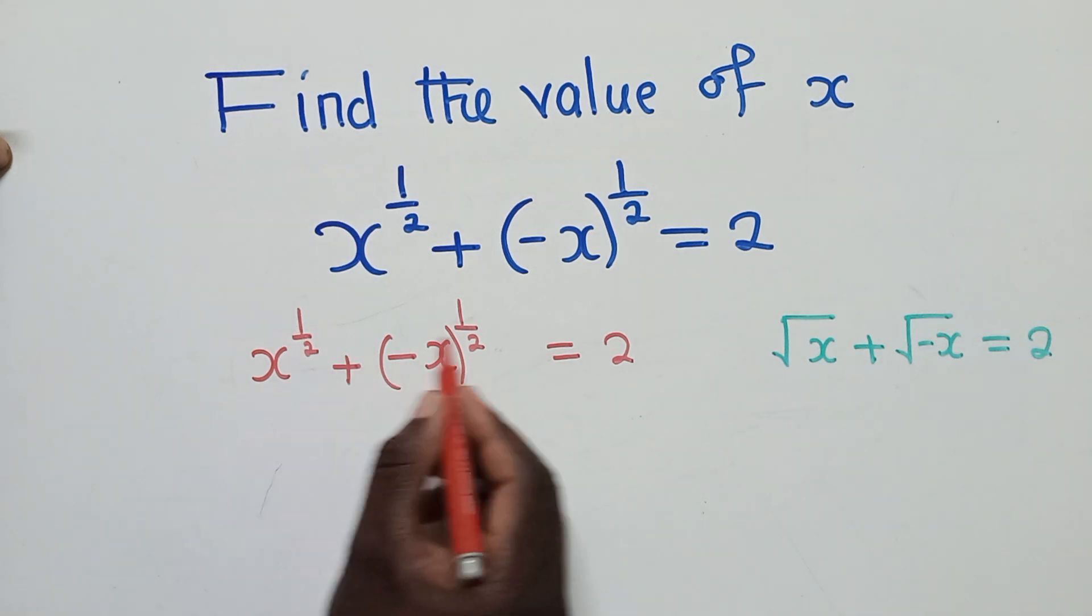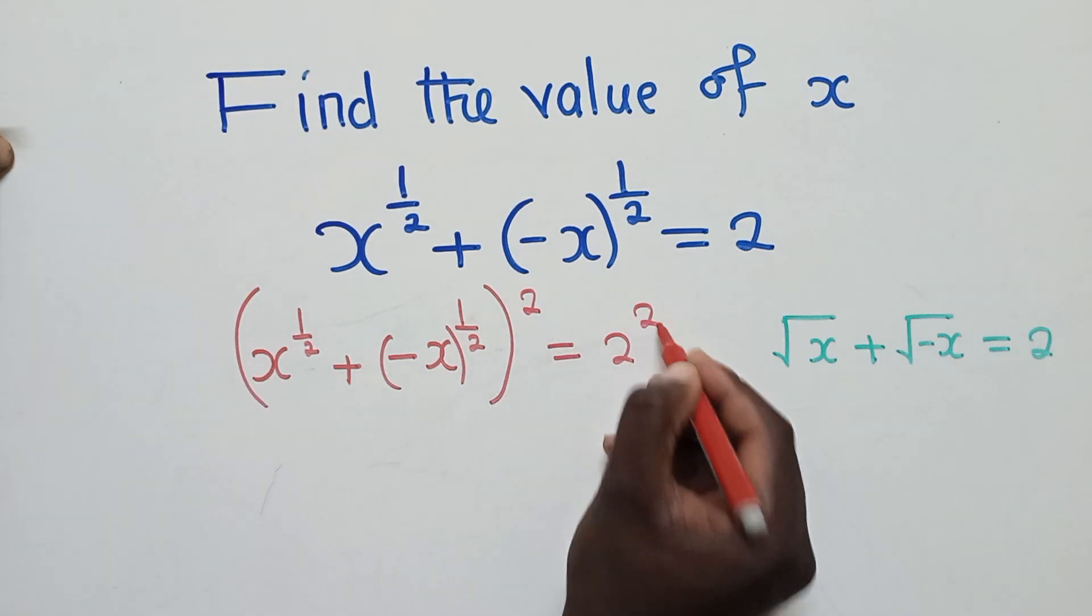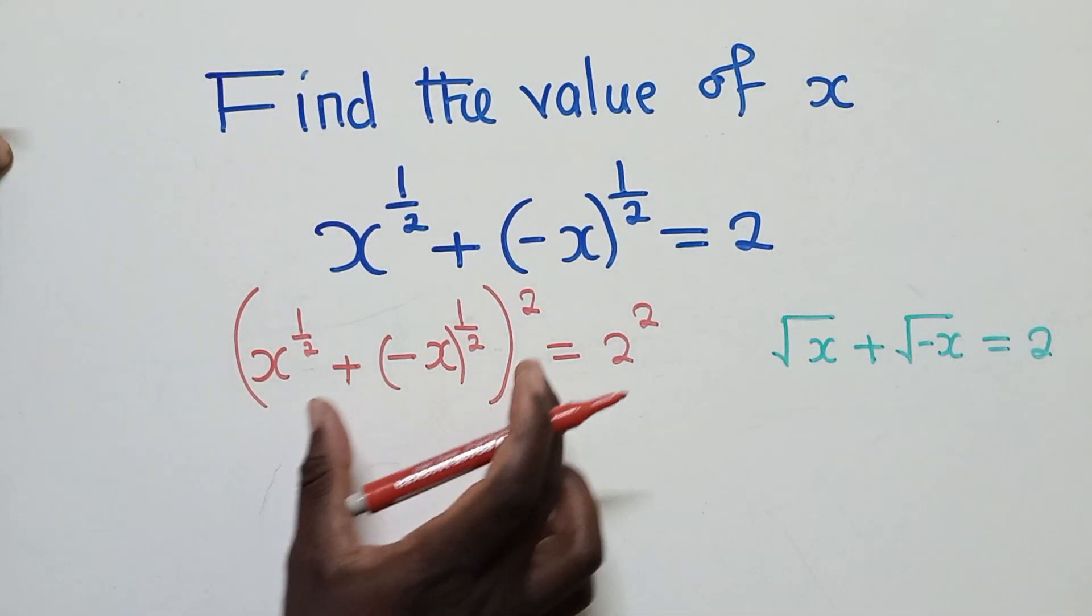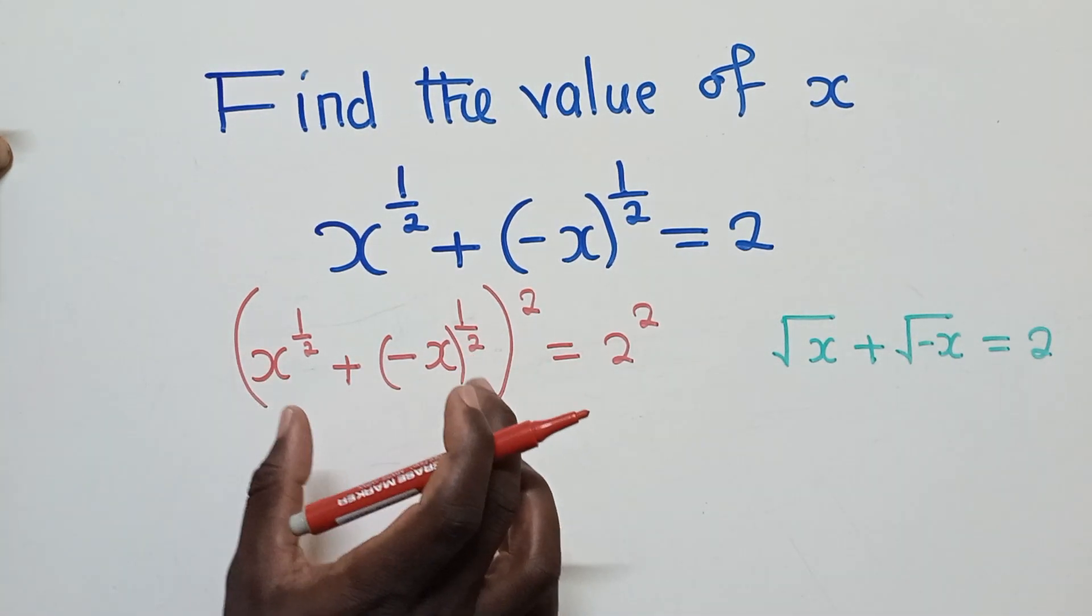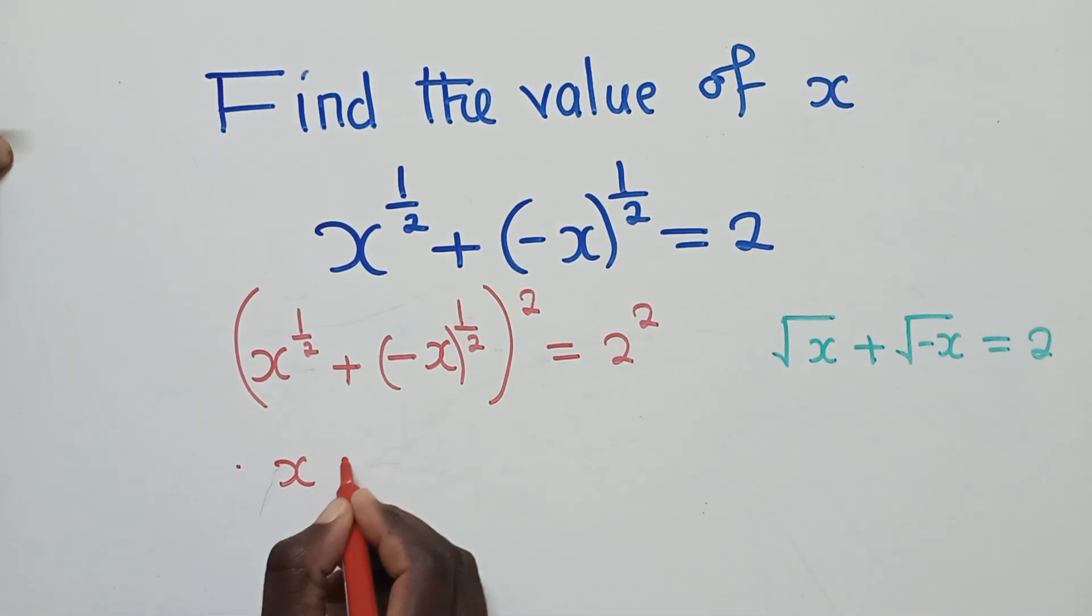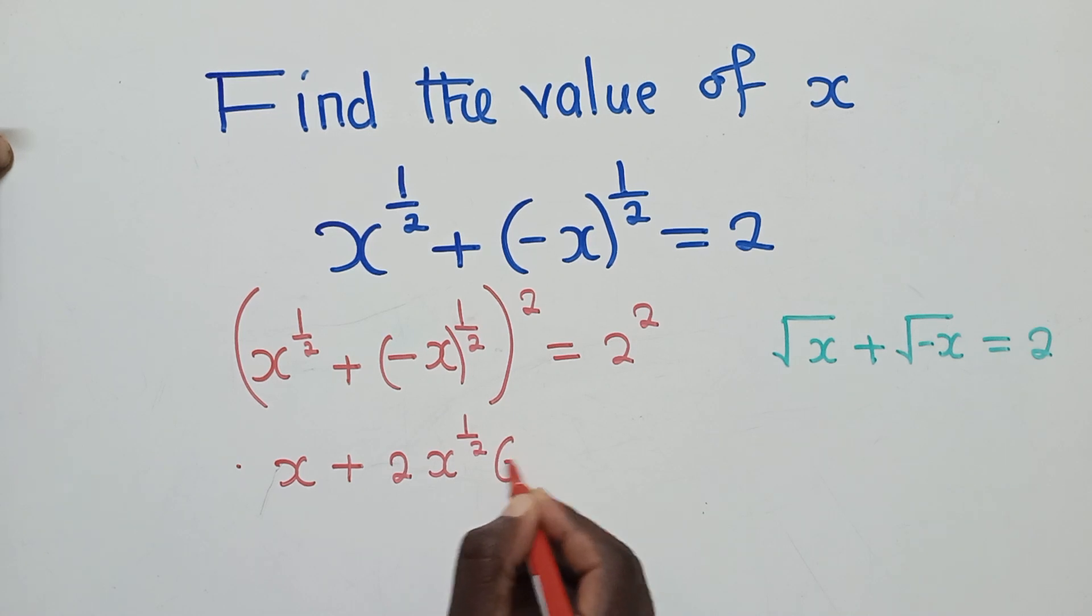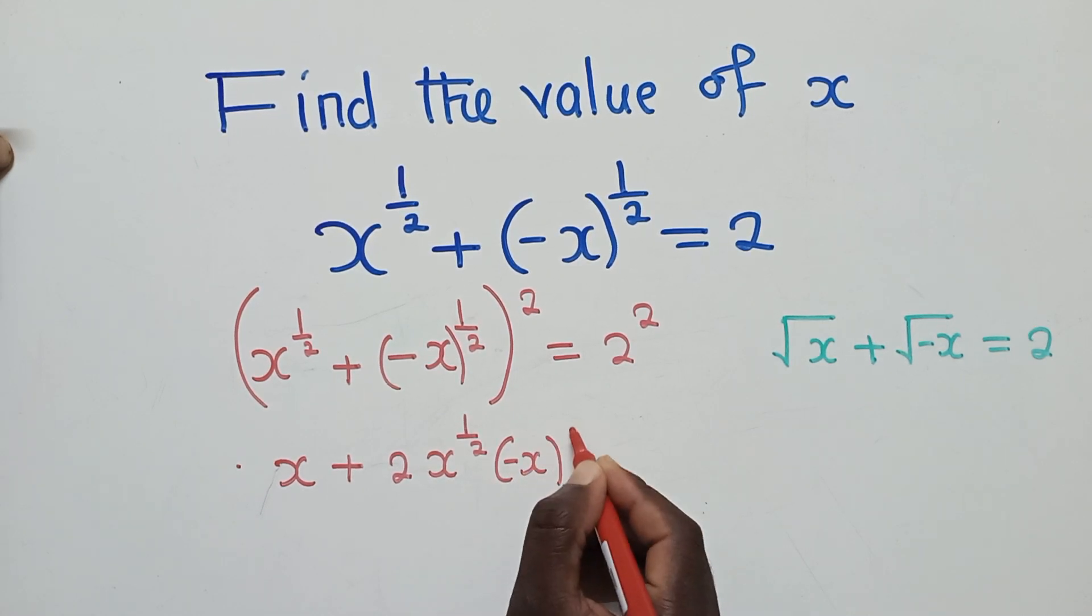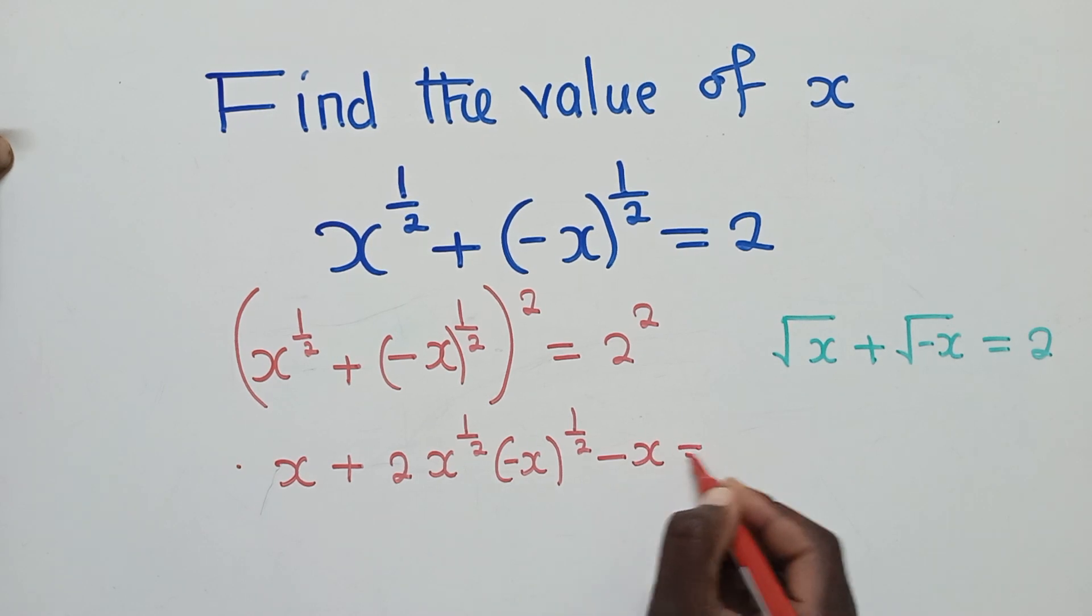Okay, so now to get rid of these powers, we're going to put a power 2 here and a power 2 this side. So what this power 2 means, it means multiply what is inside by itself. So it will give us x plus 2x power 1 over 2 negative x there power 1 over 2. Don't forget the brackets. Here minus x is equal to 4.